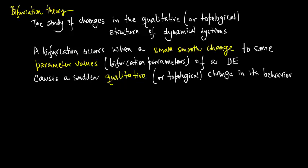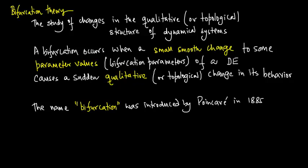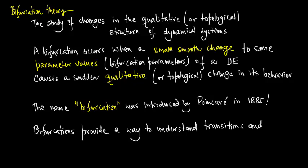Interestingly, the name bifurcation was first introduced by Henry Poincaré in 1885. Bifurcations provide us with a way to understand transitions and instabilities as system control parameters vary.